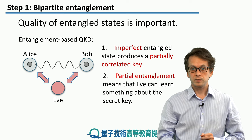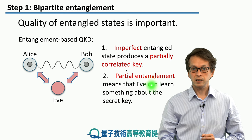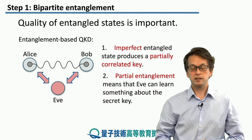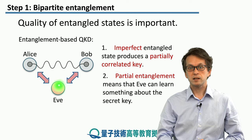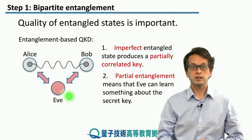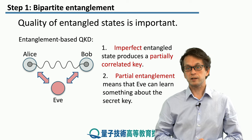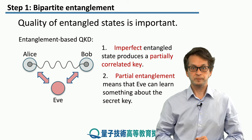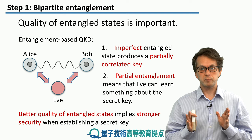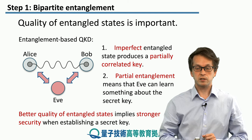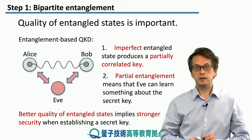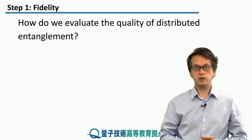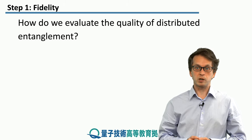More crucially, the quality of the entanglement also tells us something about the security of the entire protocol. If they are not sharing a maximally entangled state, there is some chance that their qubit is correlated with some qubit that an eavesdropper has in their possession, which means a clever adversary can find some information about the secret key that Alice and Bob are trying to establish. So, better quality entangled states lead to stronger security during the establishment of a secret key.